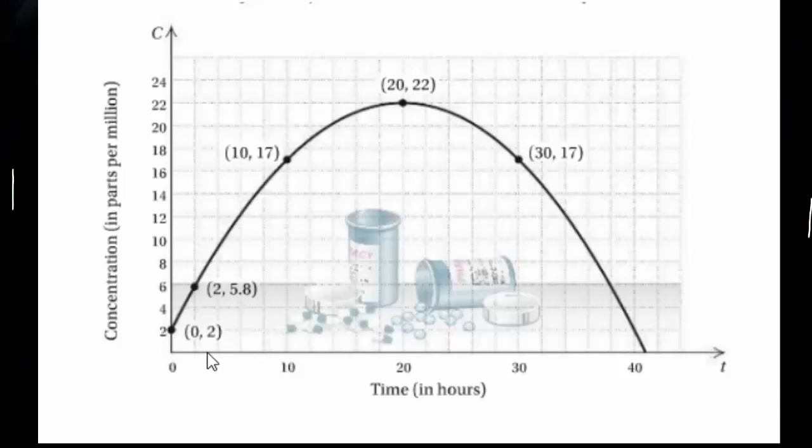So if we go over to 3 on our x-axis, that represents time. Follow it up to our polynomial. And over to the y-axis, the concentration axis, what are we looking at? So at t equals 3, my concentration is approximately around 7.5 parts per million.